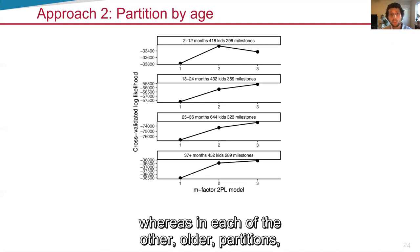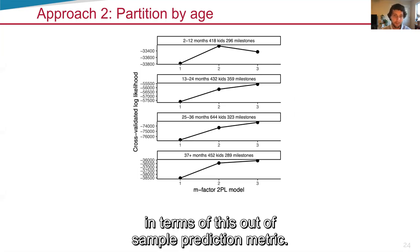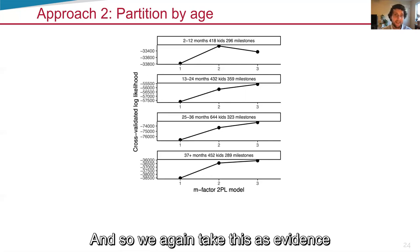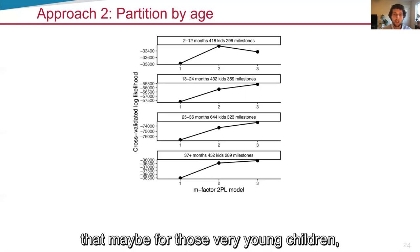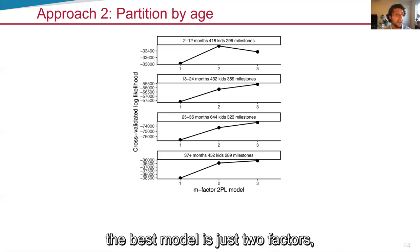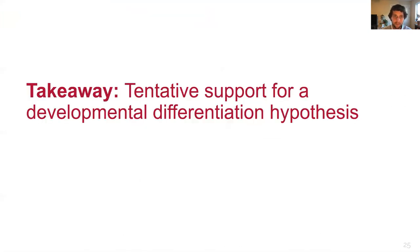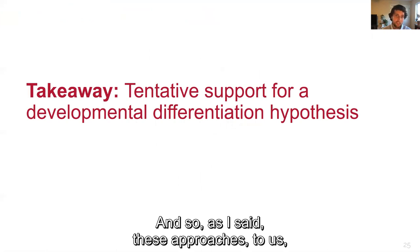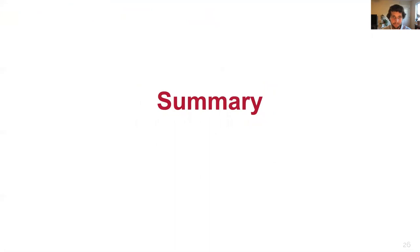Whereas in each of the other older partitions, it's the three-factor model that wins in terms of this out-of-sample prediction metric. And so we again take this as evidence for the differentiation hypothesis, that maybe for those very young children, the best model is just two factors as shown by the top facet of this graph. And so as I said, these approaches to us are tentative support for a developmental differentiation hypothesis, which we find quite interesting.